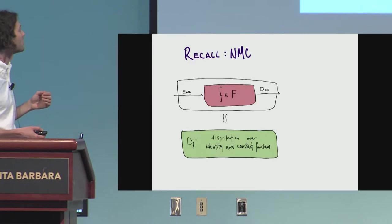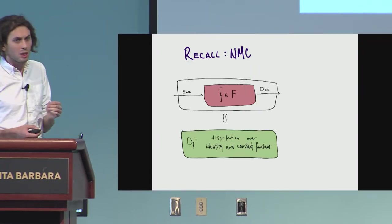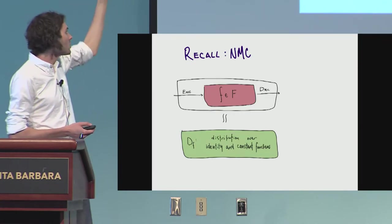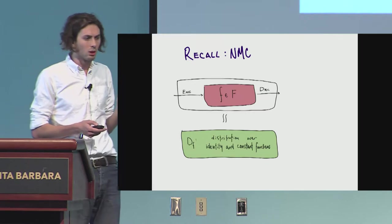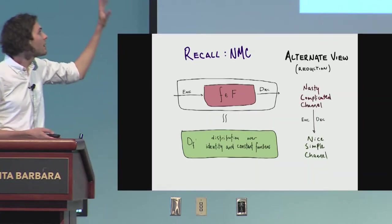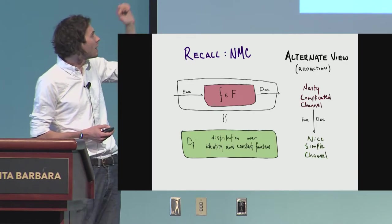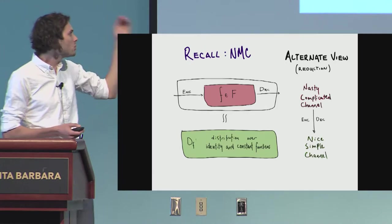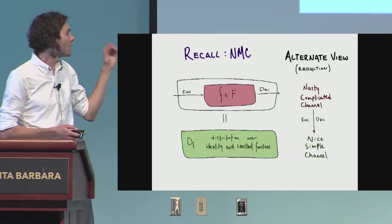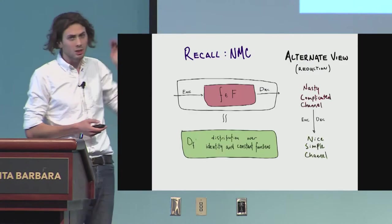Going back, recall the definition of the non-malleable code. The definition says that this experiment is close to some distribution over identity and constant functions. So another way of viewing this, introduced by some others, is viewing this as taking a complicated channel and reducing it to a simple channel.